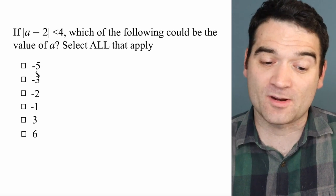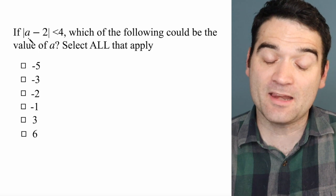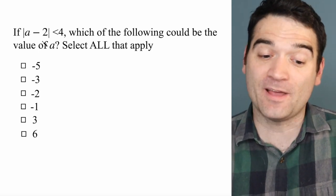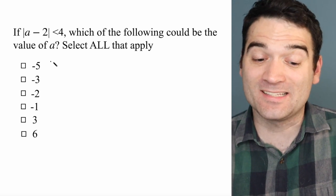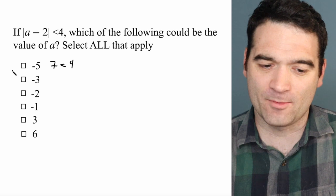We'll start with this answer option right here. If I plug in negative 5 for A, then it's negative 5 minus 2. That's negative 7. Absolute value of negative 7 is 7 is less than 4. I don't think so, right? So that one is out.